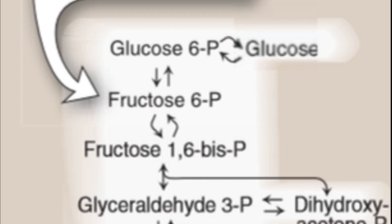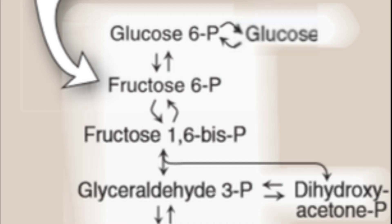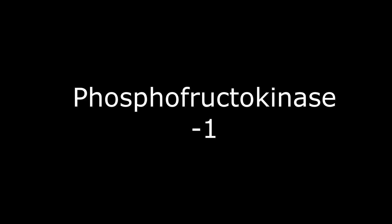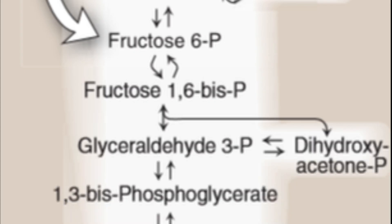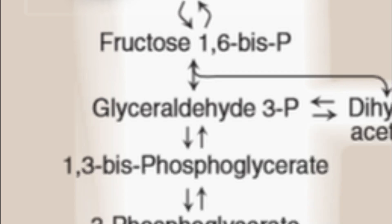Now let's go through the enzymes. The first enzyme is glucokinase, which catalyzes glucose into glucose 6-phosphate. The second enzyme is phosphoglucose isomerase — because glucose 6-phosphate and fructose 6-phosphate are isomers — catalyzing the conversion to fructose 6-phosphate. The third enzyme is phosphofructokinase-1, which catalyzes fructose 6-phosphate into fructose 1,6-bisphosphate. The fourth enzyme is aldolase, which converts fructose 1,6-bisphosphate into glyceraldehyde 3-phosphate.